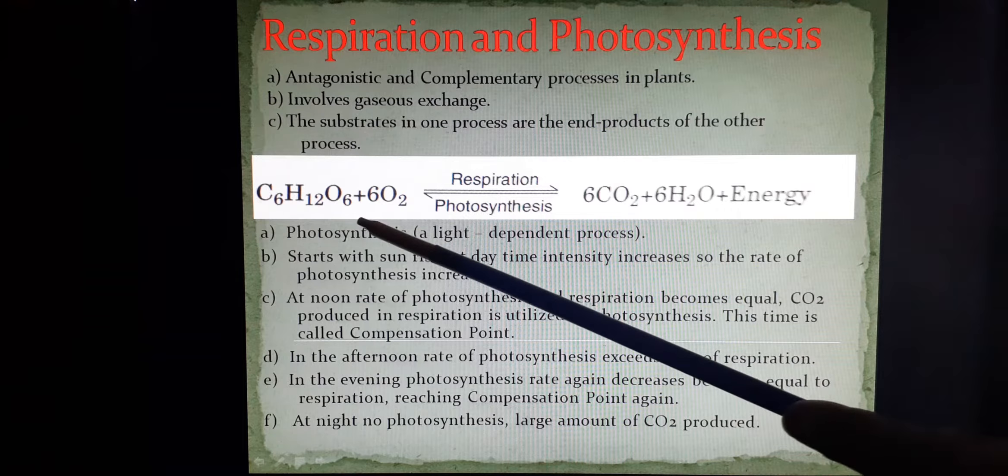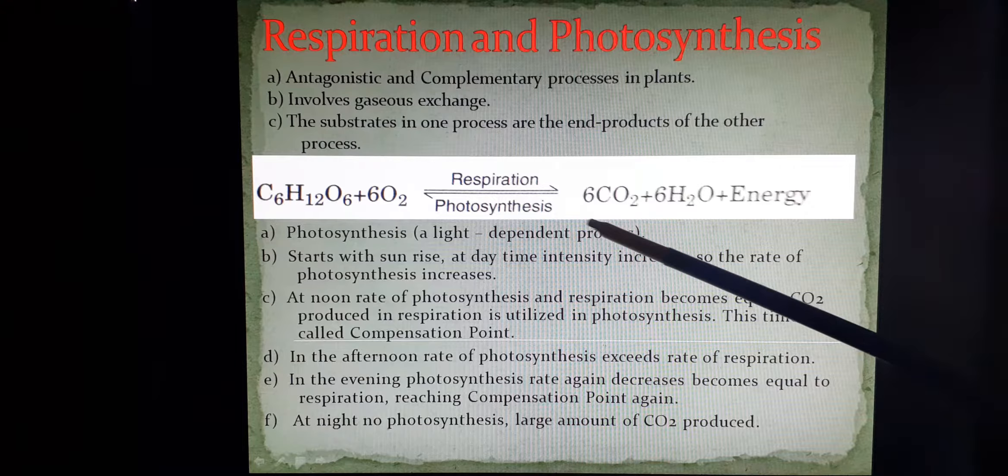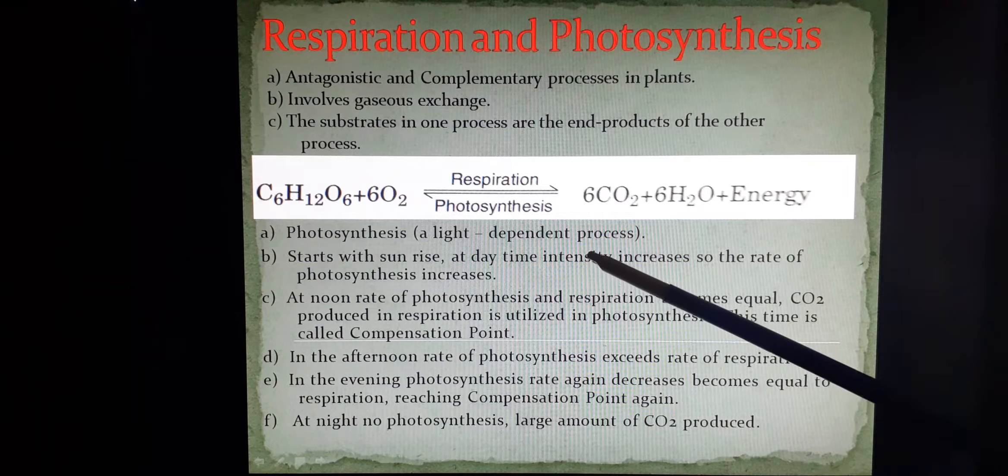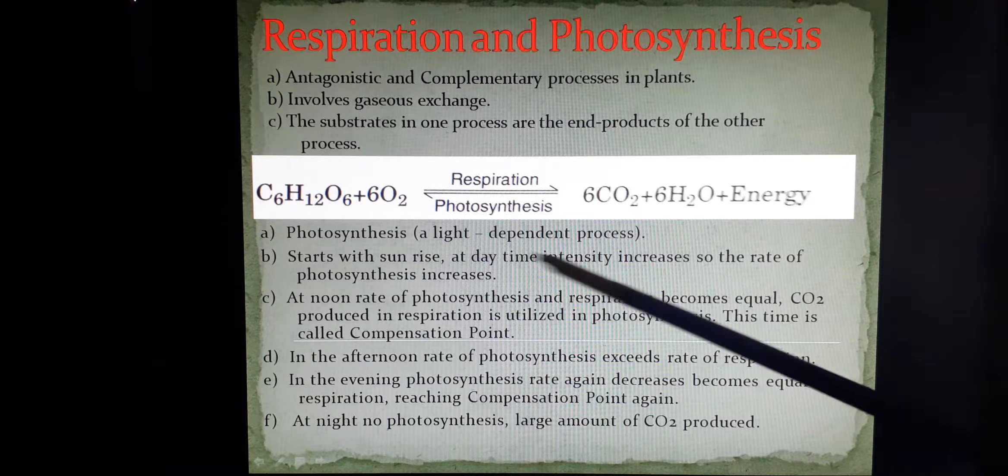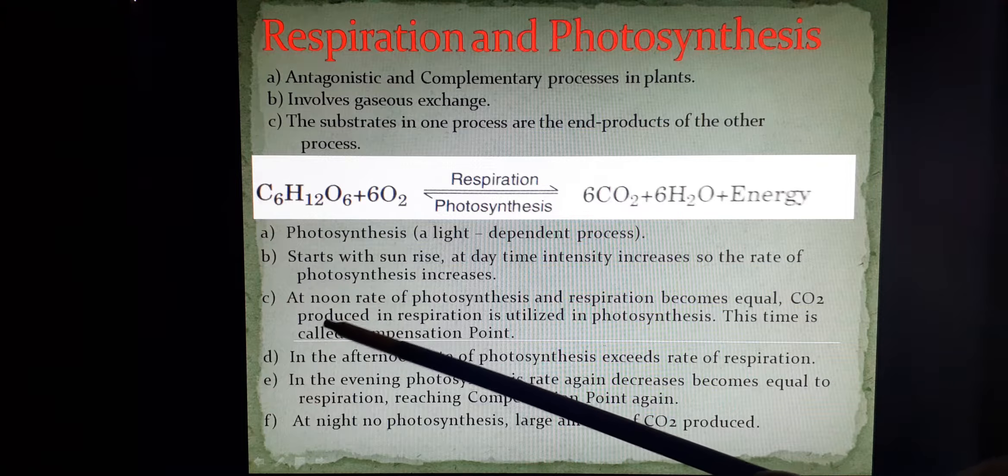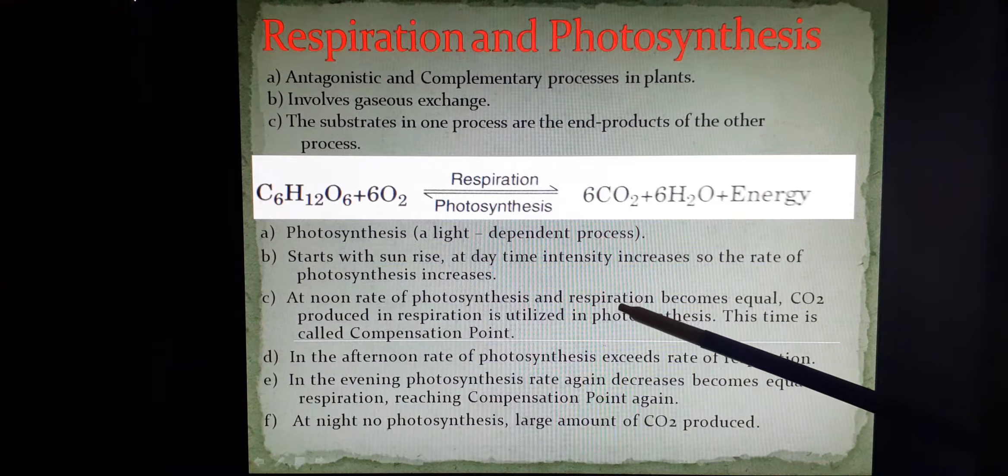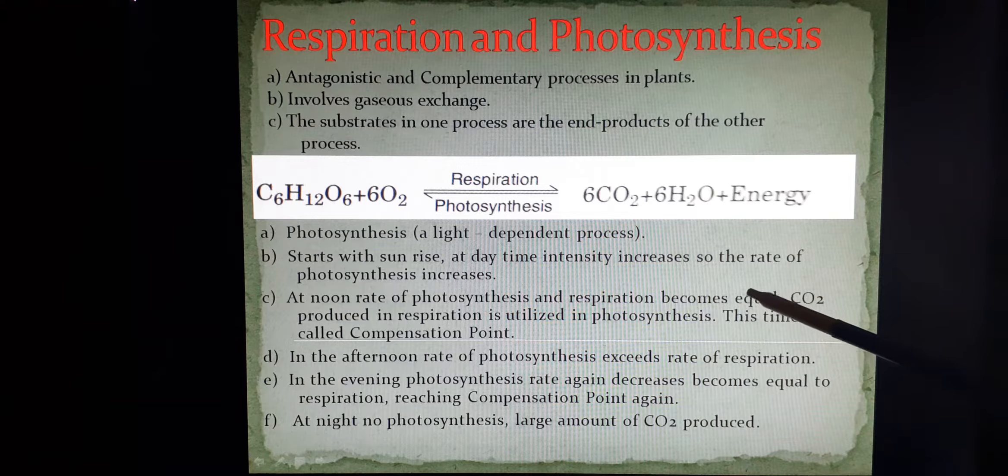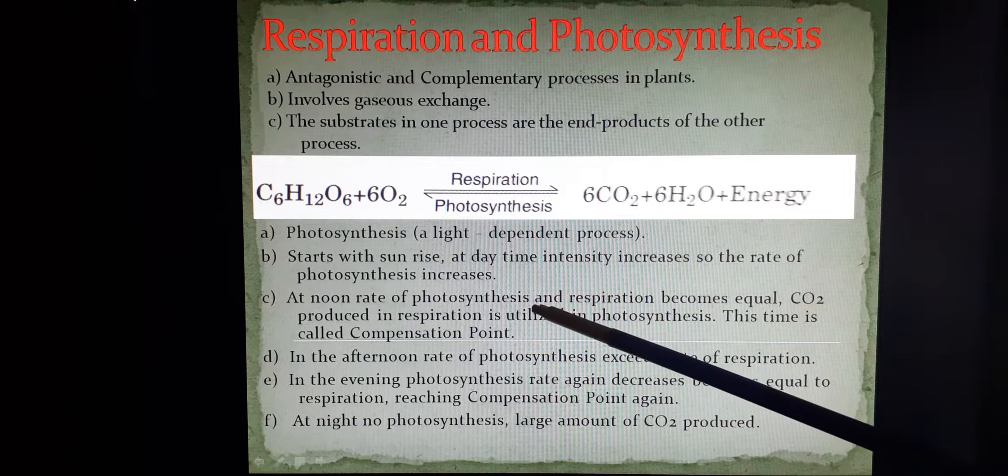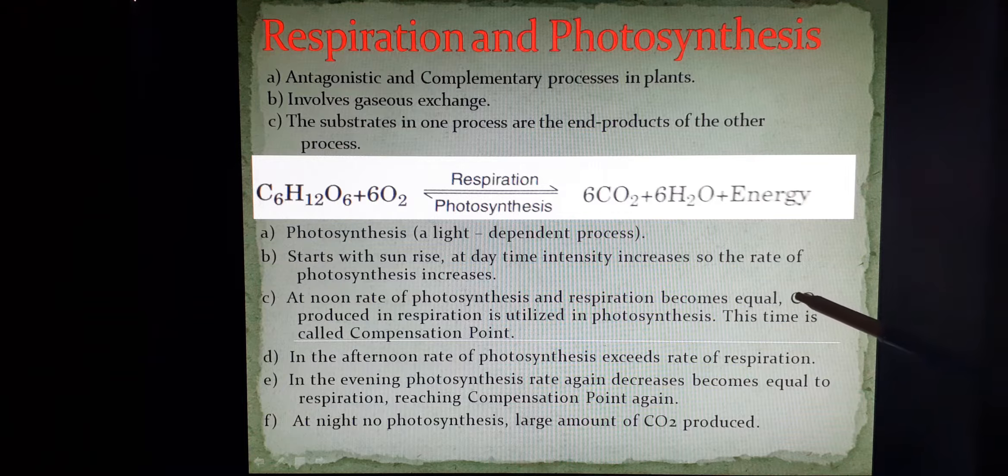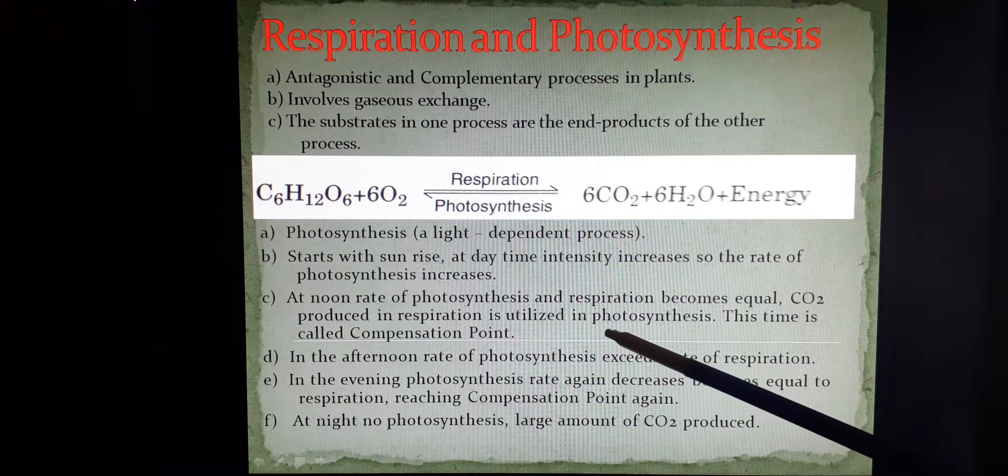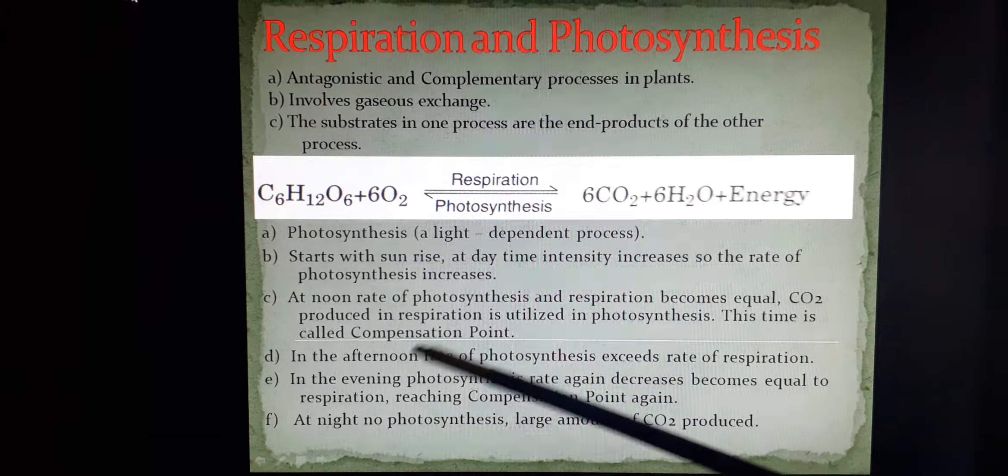To check how the plant is performing photosynthesis, which is a light dependent process, we see that photosynthesis starts during sunrise. As the day progresses, the intensity of sunlight increases and the rate of photosynthesis also increases, releasing lot of oxygen. At noon time, the rate of photosynthesis and the rate of respiration become equivalent. This shows that the oxygen provided is utilized by the plant for respiration, releasing carbon dioxide. There is no release of oxygen or carbon dioxide in the atmosphere. This time is called compensation point.